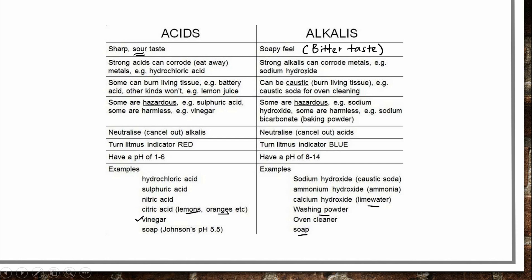Strong acids can corrode metals, and strong alkalis can also corrode metals and burn living tissue — for example, battery acid. Some acids are hazardous, like sulfuric acid, while others like vinegar are harmless. Similarly, some alkalis are hazardous, like sodium hydroxide or potassium hydroxide, while sodium bicarbonate — baking powder used in baking — is harmless.